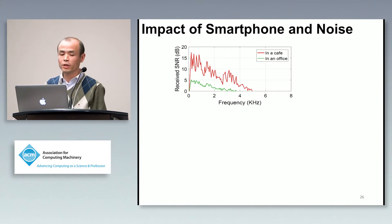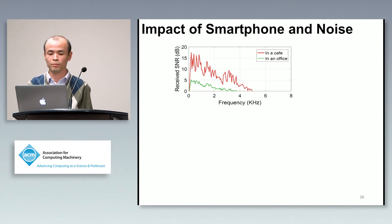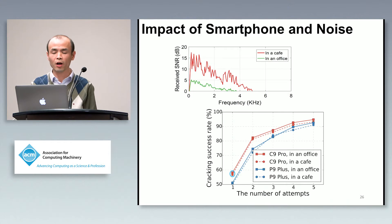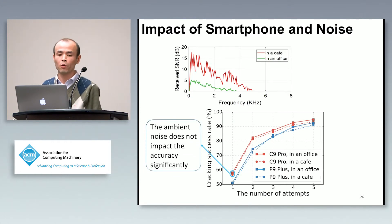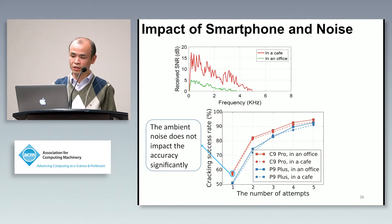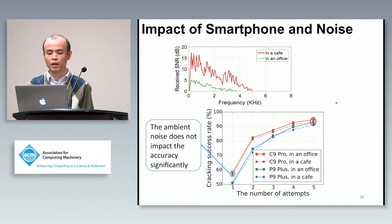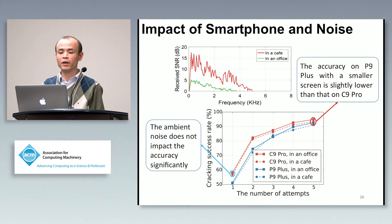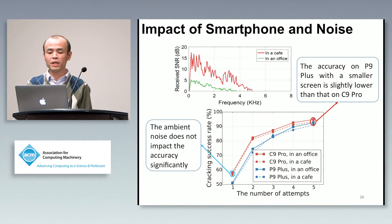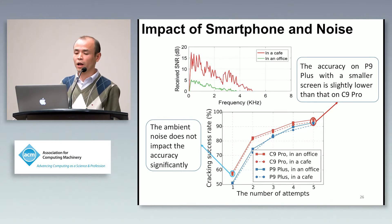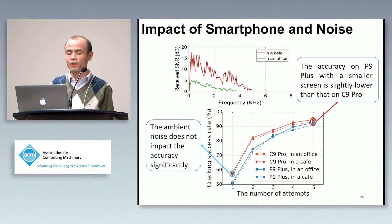Here is the result of the impact of smartphone model and noise. We launched the attack in a cave and in an office, and used two phone models: a Huawei phone and a Samsung phone. The noise does not impact accuracy significantly, but the different phones do show different accuracies. The Huawei P9 Plus has slightly lower accuracy because its smaller screen means we get fewer signals to infer the pattern.